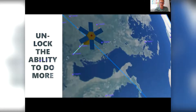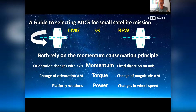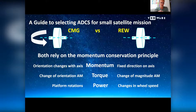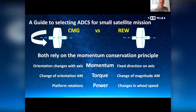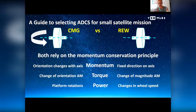Our sales team has noticed that awareness of the existence of CMGs on the market for small satellites is not always present. When searching for actuators, often the search is done with reaction wheels as a keyword. So we made a small overview of the two technologies to compare how they work and what they do. CMGs and reaction wheels both rely on the principle of momentum conservation. With a reaction wheel, this momentum is fixed in the direction of the spin axis, while with a CMG, we can redirect the direction of the momentum by turning the rotating platform.